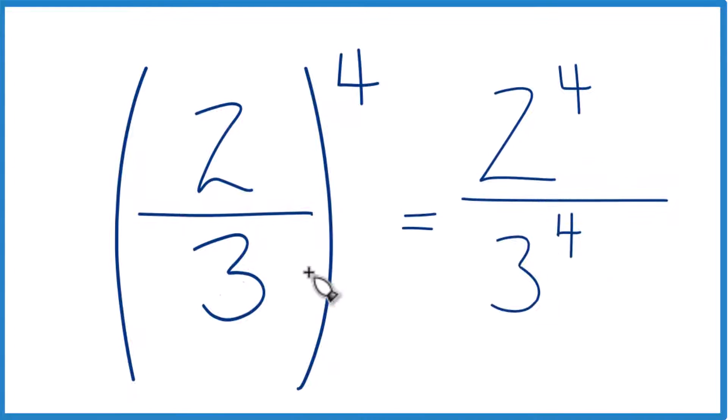So these two here, they're the same thing. And you can think about it, because we're taking two-thirds times two-thirds times two-thirds times two-thirds, that's two-thirds to the fourth power.